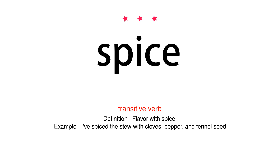Transitive verb. Definition. Flavor with spice. Example: I've spiced the stew with cloves, pepper, and fennel seed.